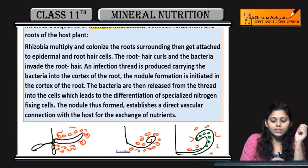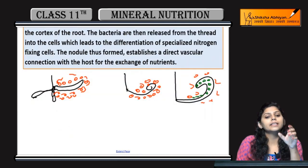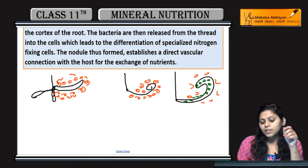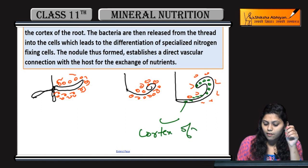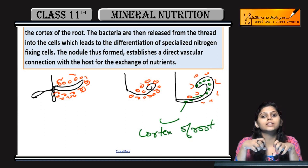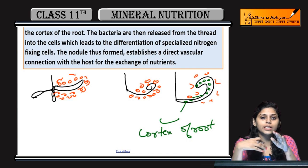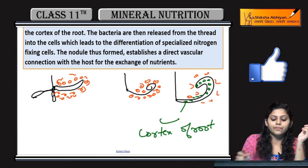ये जो infection thread बनी है, ये रीच करेगी cortex of root को. जब ये रीच करेगी cortex of root को, वहाँ पर जाके bacteria वहाँ से remove हो जाएगे और nodule formation हो जाएगी जब cell division हो रही होगी.